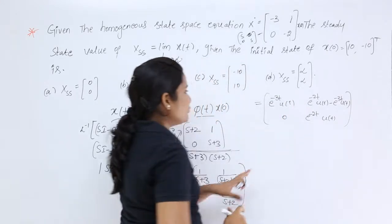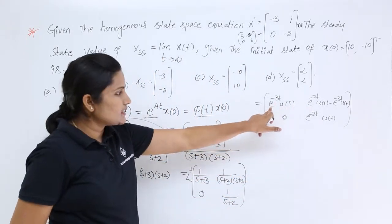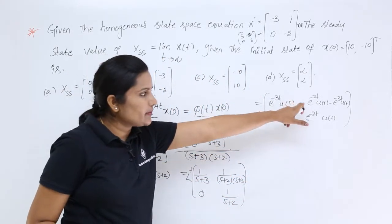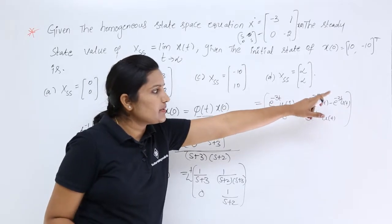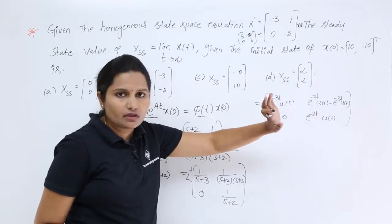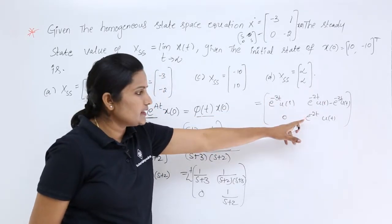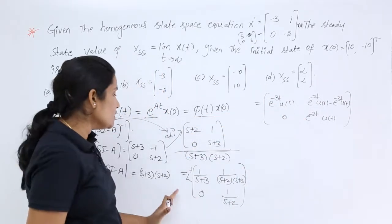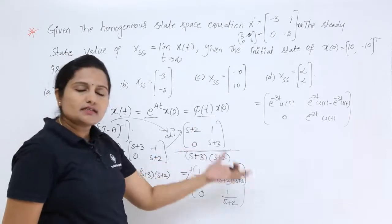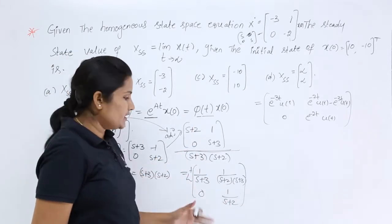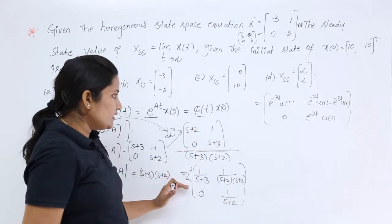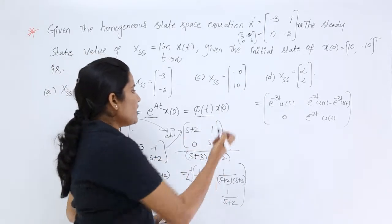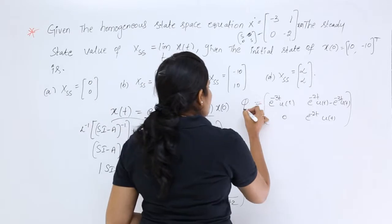There is no need to consider u(t); we can just write e^(-3t), e^(-3t), and e^(-2t) directly. So now we have our φ(t) in hand.